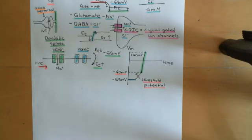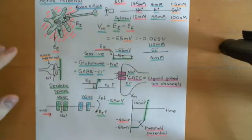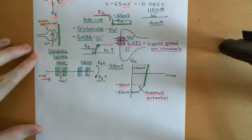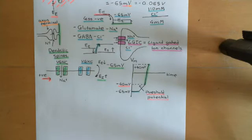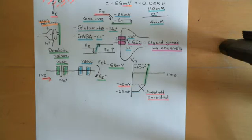We've discussed that the action potential is going to be initiated at the axon hillock of neurons, and it's going to be initiated when you get a large enough net amount of positive charge arriving in the cytoplasm of the axon hillock. The dendrites of the neuron will be covered in dendritic spines, which will have other neurons synapsing onto them, and those neurons will either be trying to excite the neuron or inhibit the neuron. If they're trying to excite the neuron, they'll release glutamate onto the dendritic spine, which will open ligand-gated ion channels, which allow sodium currents into the cytoplasm of the neuron.